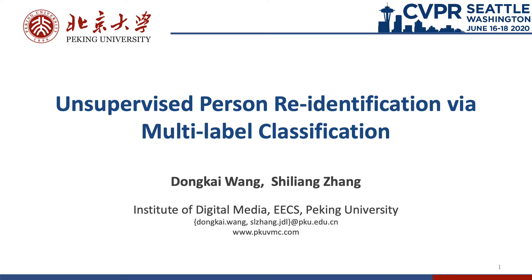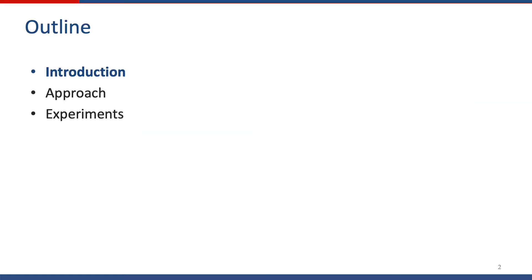My report is on unsupervised person re-identification via multilabel classification. I'm Dong Kai Wang from Peking University. This is a joint work with my advisor, Professor Shi Liang Zhang. This is the outline of this report, so let's start with the introduction.